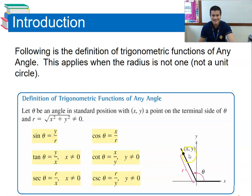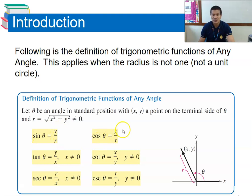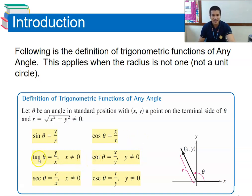Remembering SOH-CAH-TOA: sine equals opposite over hypotenuse (y/r), cosine equals adjacent over hypotenuse (x/r), and tangent equals opposite over adjacent (y/x), where x is not equal to zero — because if the denominator equals zero, the result is undefined. Cotangent is the reciprocal of tangent (x/y), secant is the reciprocal of cosine (r/x), and cosecant is the reciprocal of sine (r/y).